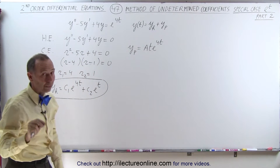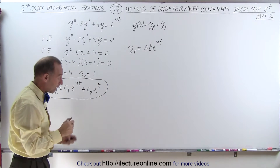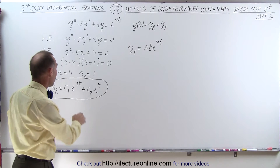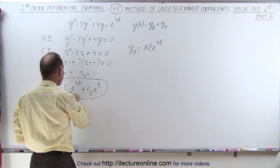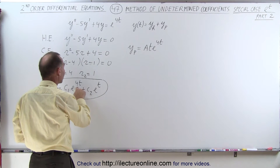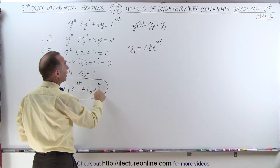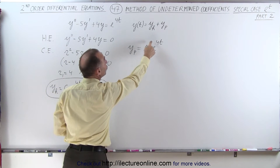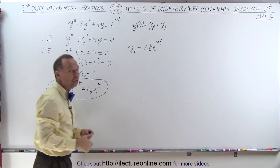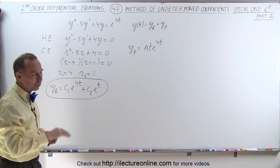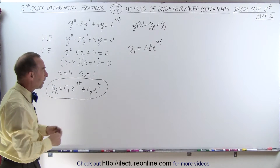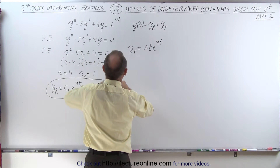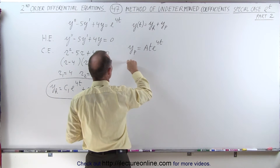That form will work. We still have to be careful — if for example the general solution had t·e^(4t) as well as e^(4t), then the next step would be to multiply by t squared, and just continue to work it out that way. We'll see some examples of that later, but let's use this one first. So first we're going to get the first derivative of the particular solution.